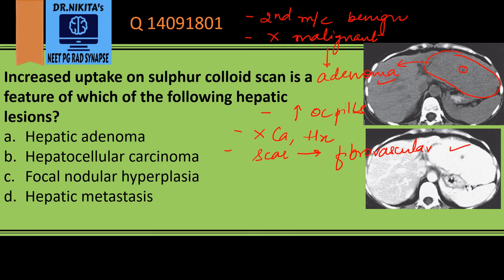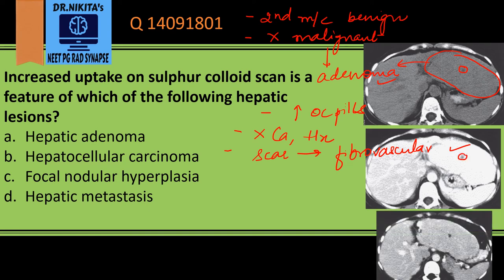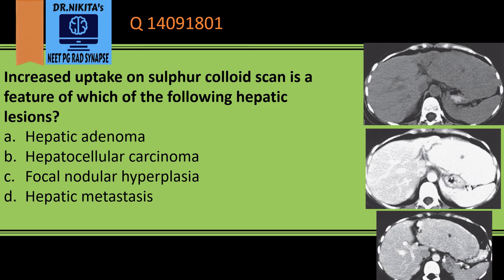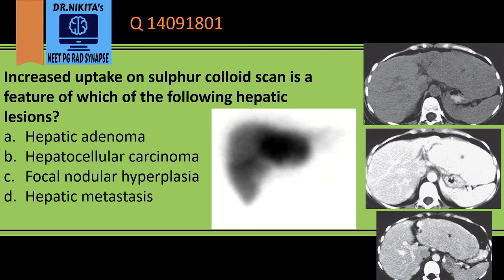On the arterial phase scan, the lesion shows enhancement — it has an arterial supply via the hepatic artery — and there is a hypo-enhancing central scar. In the portal venous phase it becomes isodense to liver parenchyma, with the hypo-enhancing central scar showing delayed enhancement. The central scar with delayed enhancement is an important imaging feature.